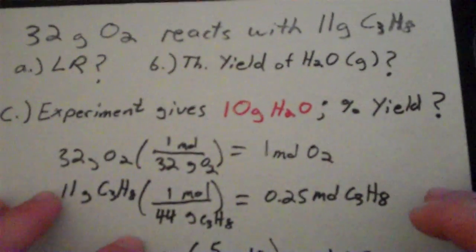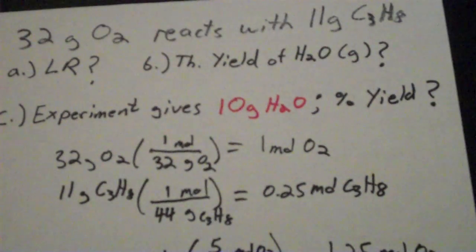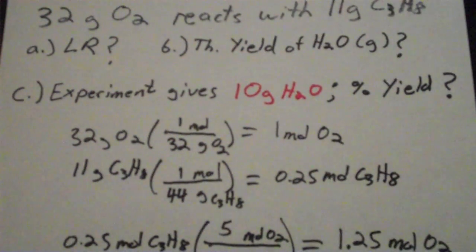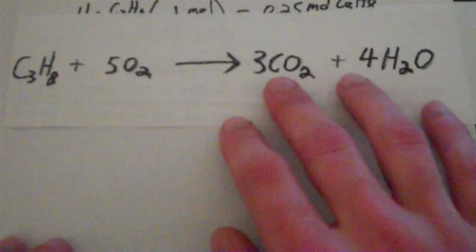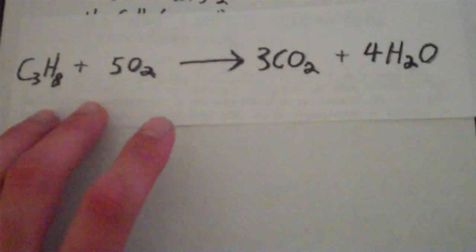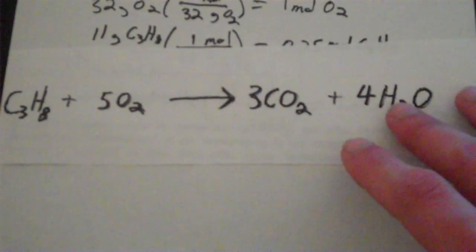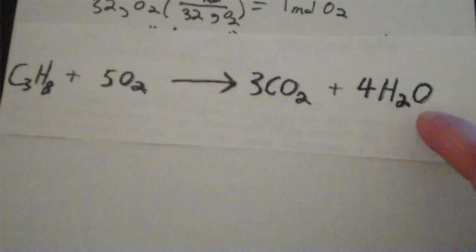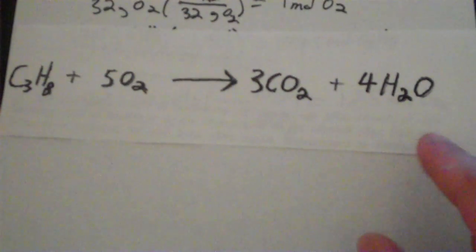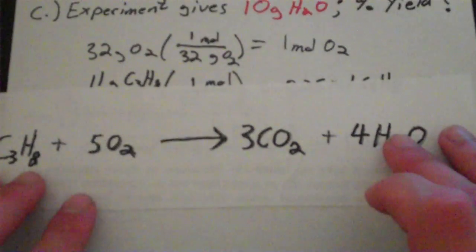So now what we have to do is calculate the theoretical yield of water in grams. We have to remember here that the theoretical yield is always going to be based on the limiting reagent. And in that case, this is oxygen. So now what I'm going to do is I'm going to express the mass of water in grams that is formed when five moles of oxygen reacts with excess propane. We're going to start with our moles of oxygen. We have one mole of oxygen.